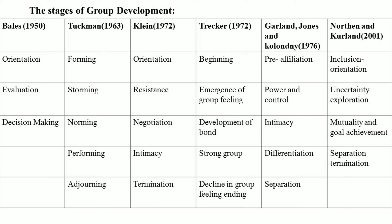Claim in 1972 proposed stages starting from orientation, resistance, negotiation, intimacy, and termination. Trekker in 1972 developed stages: beginning, emergence of group feeling, development of bond, storm, group decline in feeling, and ending. Garland and others in 1976 proposed pre-affiliation, power and control, intimacy, differentiation, and separation.